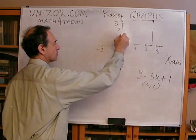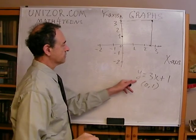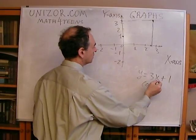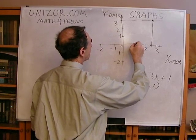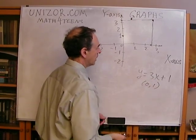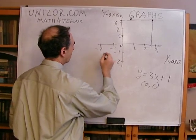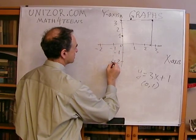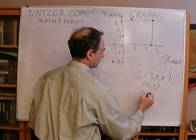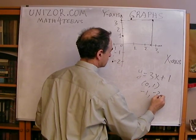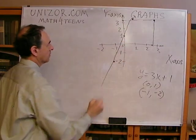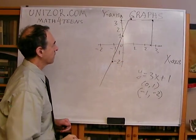This point belongs to our function — it represents the value of the function when the argument equals 0. If the argument is equal to 1, then y = 4, so we get the point (1, 4). If argument is equal to minus 1, that gives minus 3 plus 1, which is minus 2 — so the point is (−1, −2). I can put many different points, and in this particular case this graph will look something like a straight line.